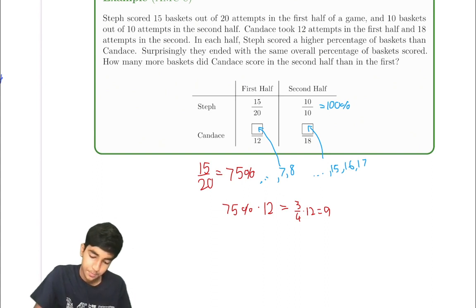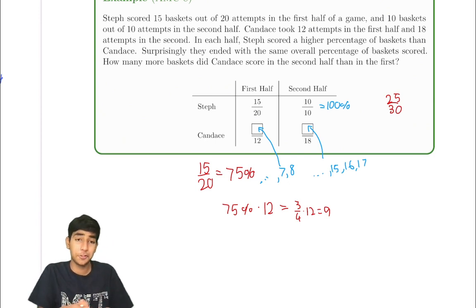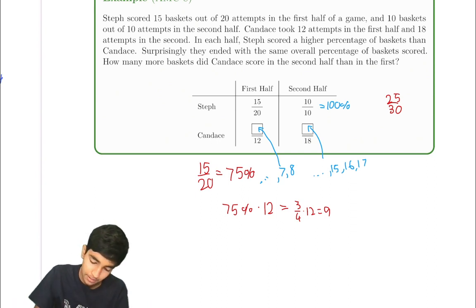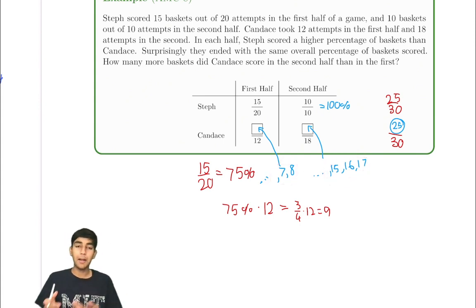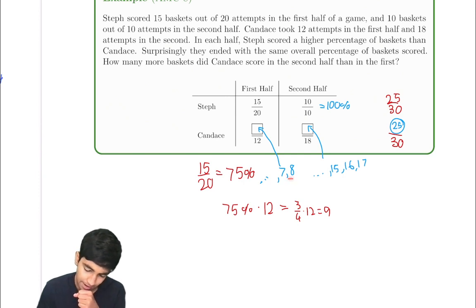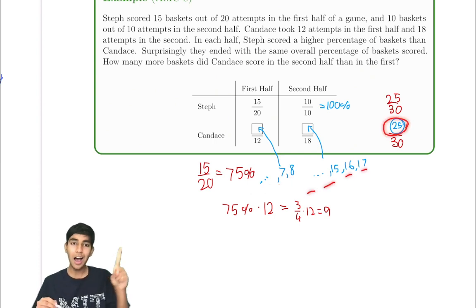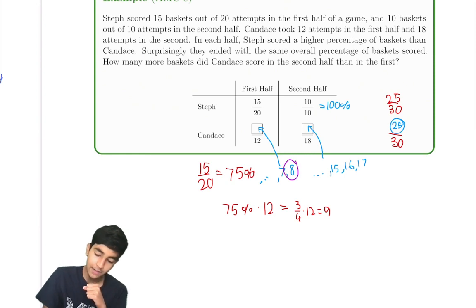But surprisingly, they ended with the same overall percentage. So what's Steph overall percentage? 25 by 30. That's the overall. I'm not going to convert it to a percent because that would just make it a nightmare with fractions or repeating decimals. And what's Candice's overall percentage? Whatever over 30. So to end up with the same overall percentage, Candice, this number must also be 25. So the sum of these two numbers attempts makes in both halves must be 25. Let's look closely here. So the first half for Candice can be eight or less. Second half is 17 or less, and the sum must be 25. Aha! They both must be the highest possibility, so eight and 17, to get the total number of baskets to be 25.